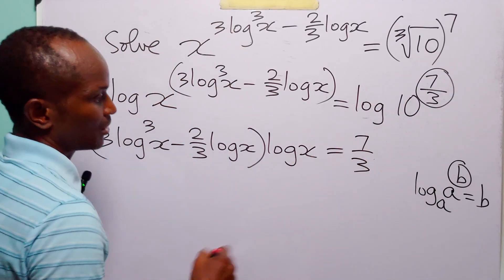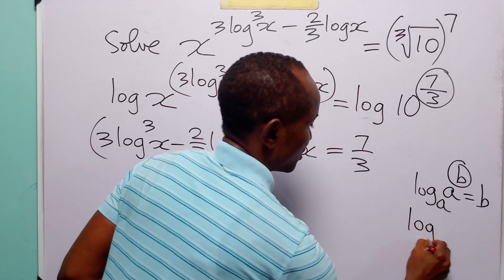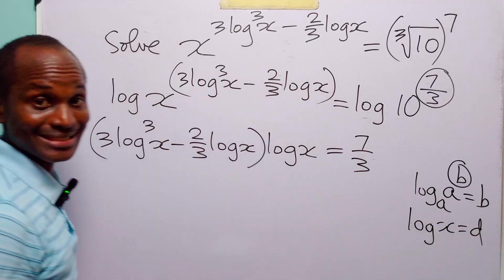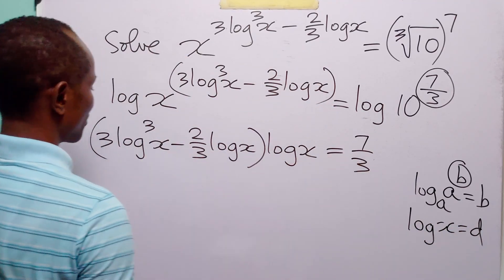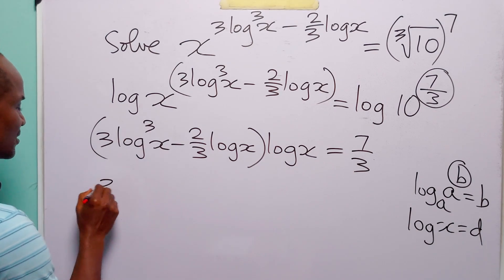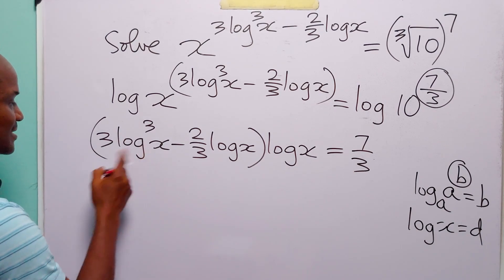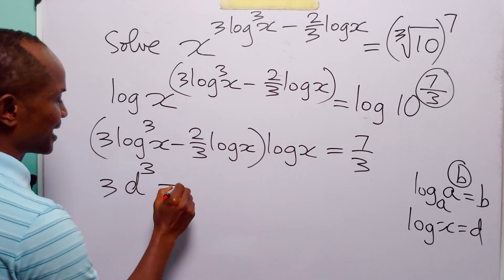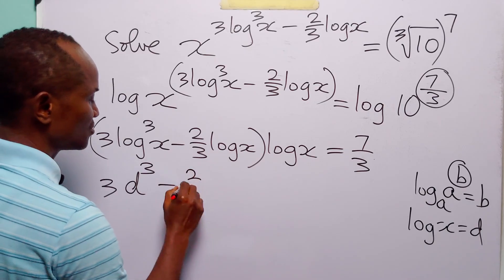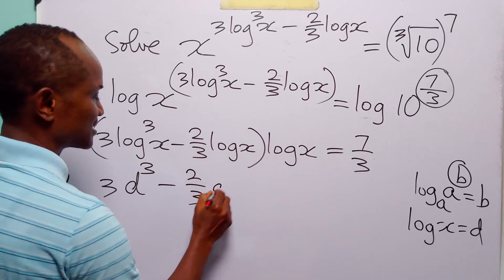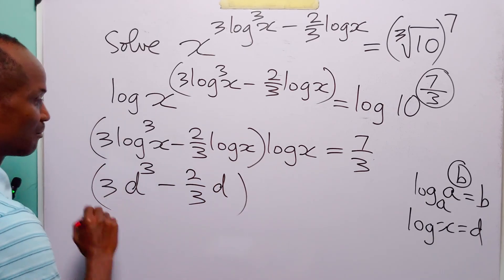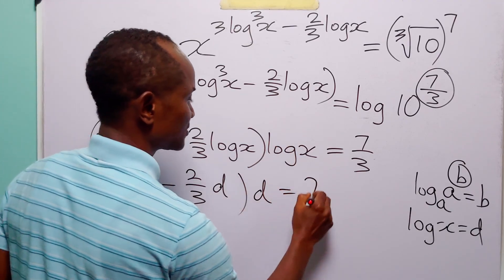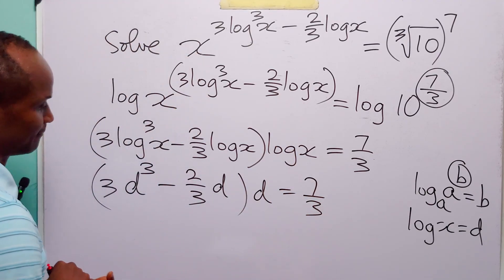Now, let log x be equal to the letter d to simplify things. So here we have 3 times d cubed minus 2 over 3 times d, multiplied by d, is equal to 7 over 3.